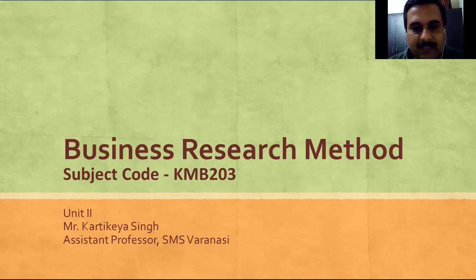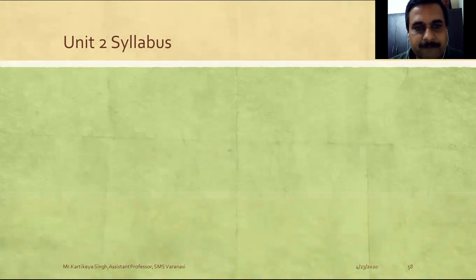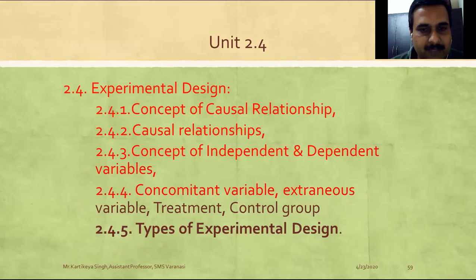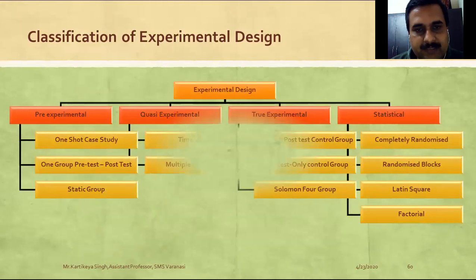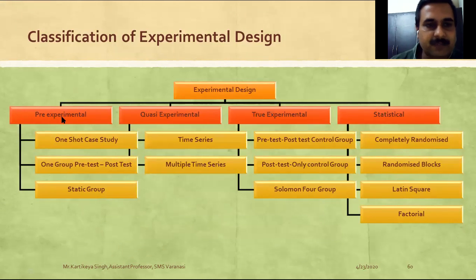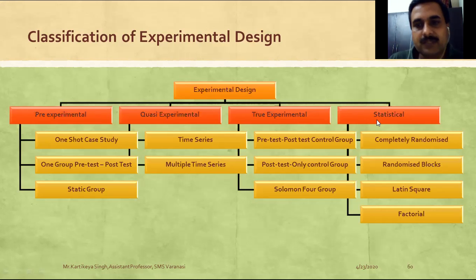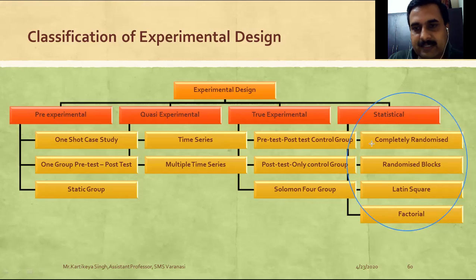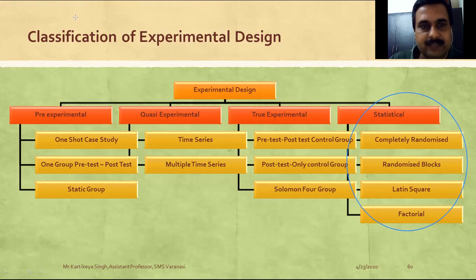We are covering research design and we have already covered three parts of it and we are into the fourth part. In the fourth part we have covered the major portion and we are now into the types of experimental research design. We have covered three experimental research designs: quasi-experimental research design and true experimental research design. And we are into the last part, that is statistical research design. In this we are going to cover completely randomized design, randomized block design, Latin square design, and factorial design.